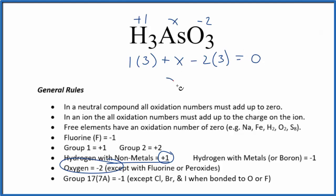If we solve for X, we'd have three and minus six, so we'd have minus three equals zero. Add three to both sides. X equals a positive three. So the oxidation number on the As in H3AsO3 is going to be a positive three.